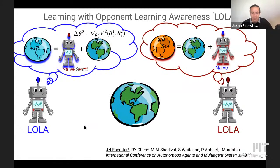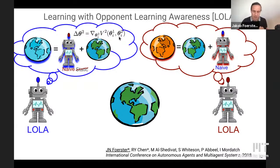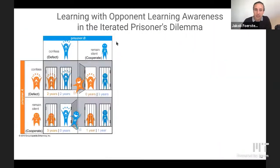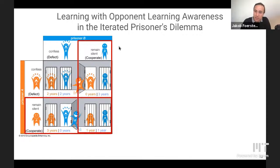We addressed this with a paper called LOLA, whereby each agent models other agents as learning. The blue agent can now account for the fact that other agents will change their parameters theta_2 in the next learning steps. The LOLA agent differentiates through that parameter update to account for how its actions change the future behavior of agents in the environment.